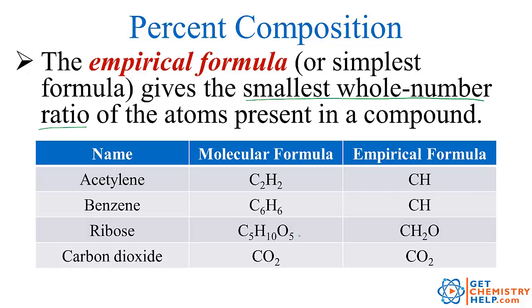How about ribose? Well ribose is a sugar found in your body, and its actual formula is 5 carbons, 10 hydrogens, and 5 oxygens. Well how can we reduce that down to the simplest whole number ratio? Well 5 to 10 to 5 could be reduced down to 1 to 2 to 1.